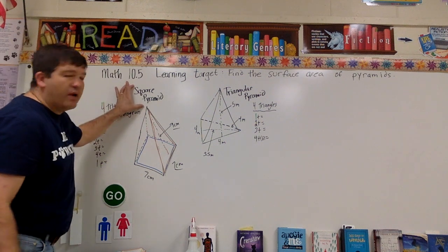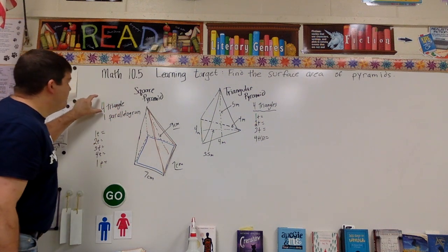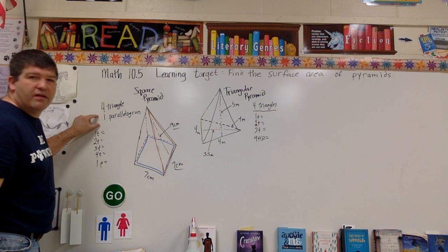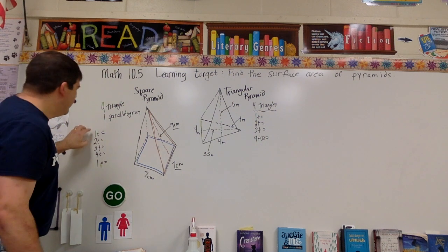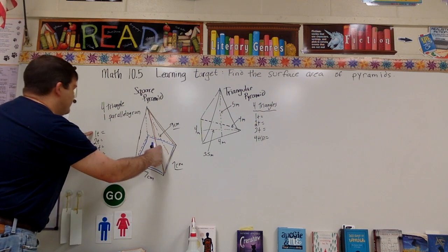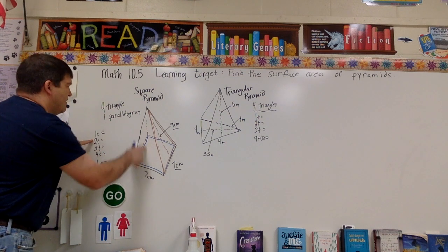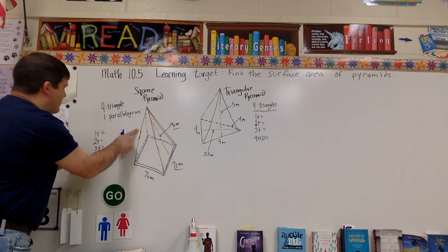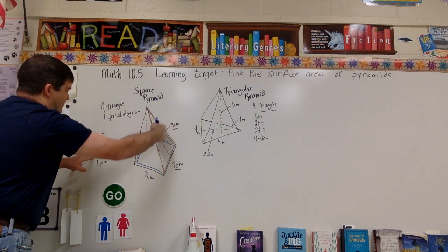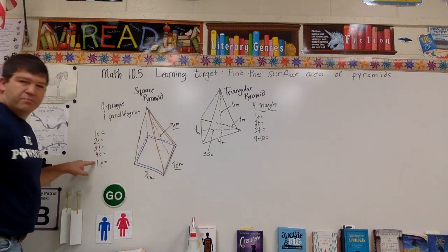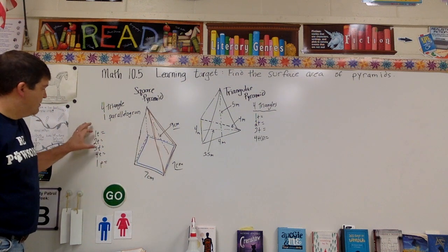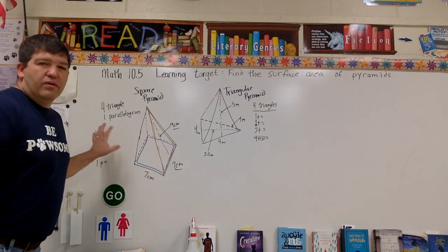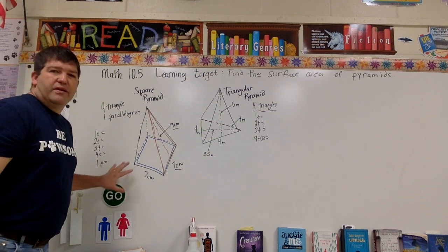For this square pyramid you're going to find the area of four triangles and one parallelogram. So you have one triangle on this side, another triangle on this side, another triangle on the back side, and another triangle on that back side. And then the base it sits on is your parallelogram. So: four triangles and a parallelogram.